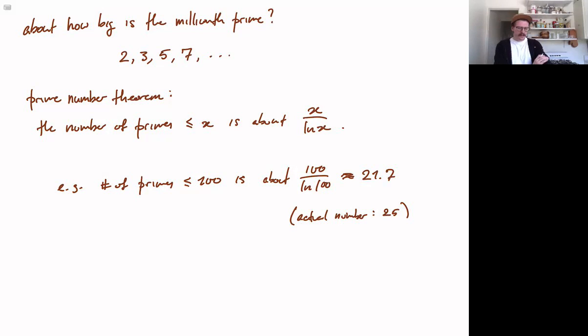So this is not too bad of an estimate. It's not right on target, but in the grand scheme, it's fairly close. So this is what the prime number theorem is telling us. How does that help us find the size of the millionth prime?